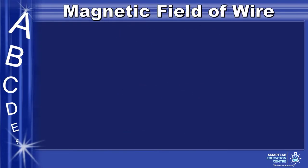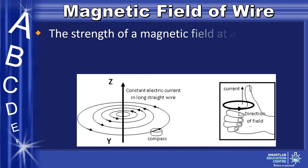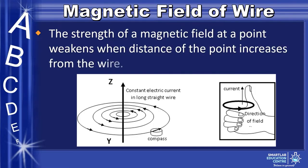Let us discuss the magnetic field of a wire. Take a look at the diagram below. You will observe that the field lines are made of concentric circles. The direction of the magnetic field lines can be seen with the right-hand thumb rule. The strength of a magnetic field at a point weakens when the distance of the point increases from the wire.